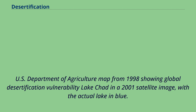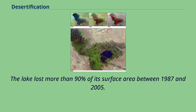A U.S. Department of Agriculture map from 1998 showing global desertification vulnerability. Lake Chad in a 2001 satellite image, with the actual lake in blue. The lake lost more than 90% of its surface area between 1987 and 2005.